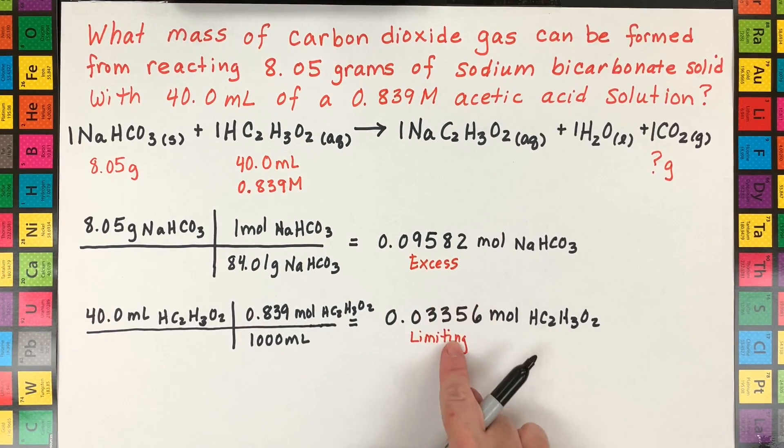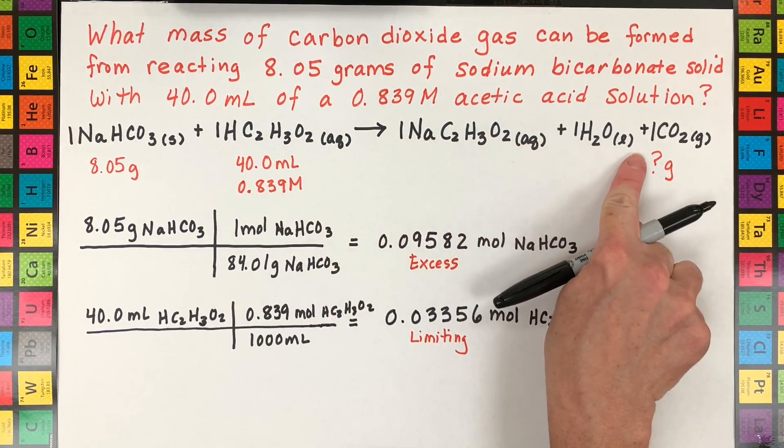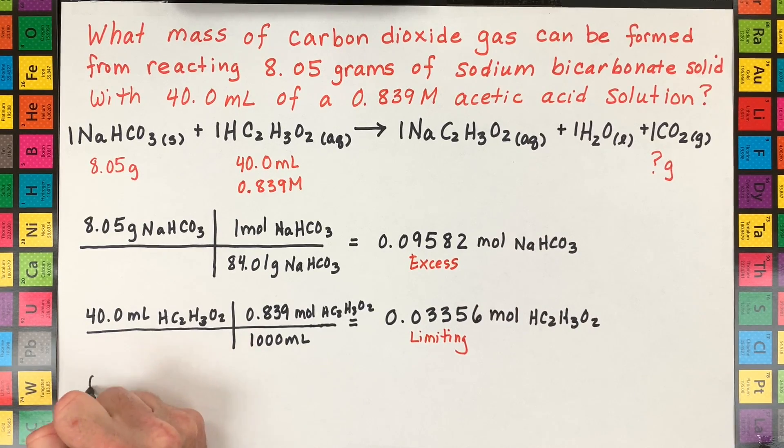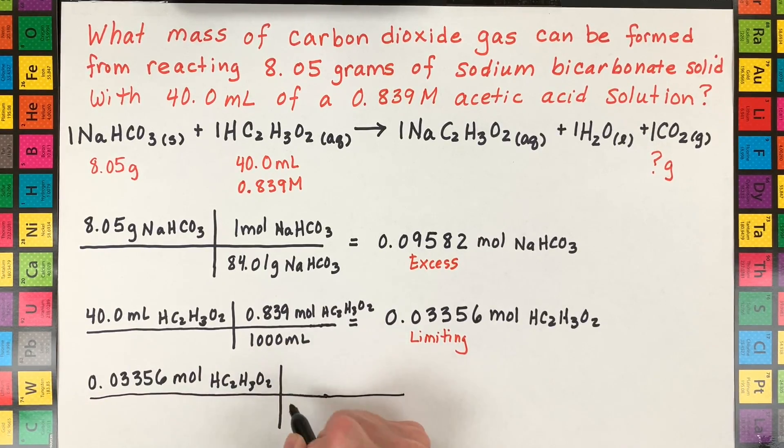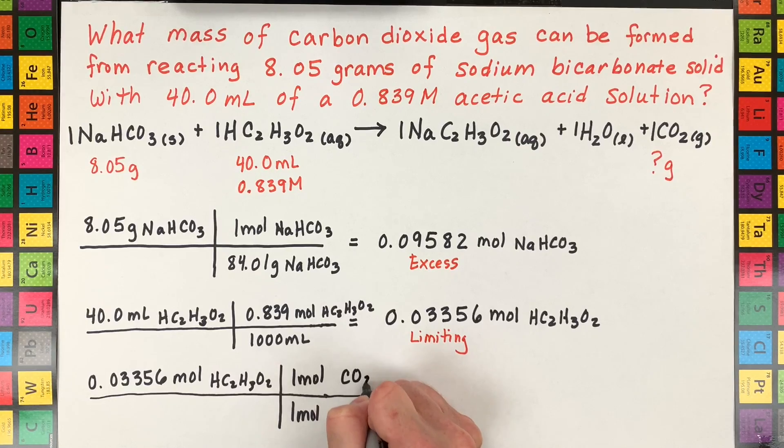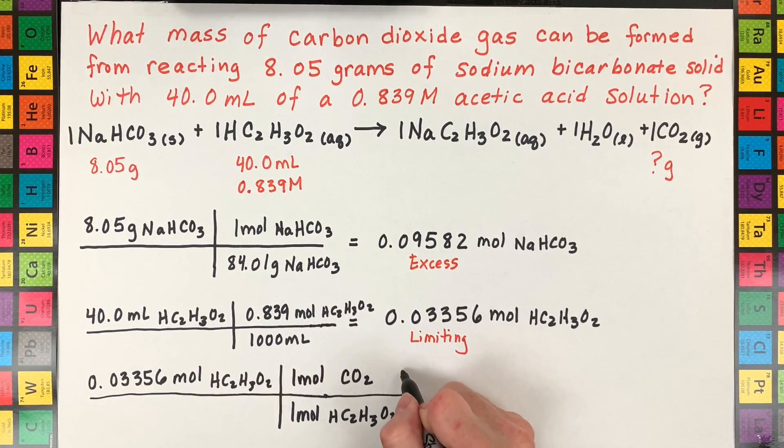So now what you need to do is take your limiting that's going to control the amount of carbon dioxide that can be produced. So start with your limiting mole amount which is the moles of the acetic acid and then run a mole ratio. So I will show you this one and they're all one-to-one. So for every one mole of acetic acid we would produce one mole of carbon dioxide gas.